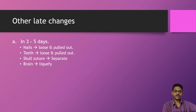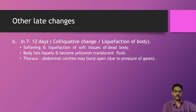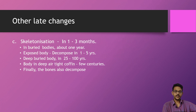These are the late signs seen in decomposition. In 3 to 5 days, nails become loose and can be pulled out; teeth become loose and can also be pulled out; skull sutures may become separate. Veins are liquefied in 7 to 12 days. There is softening and liquefaction of soft tissues; fats become a yellowish translucent fluid. The thoracic and abdominal cavities may burst open due to pressure of gases.